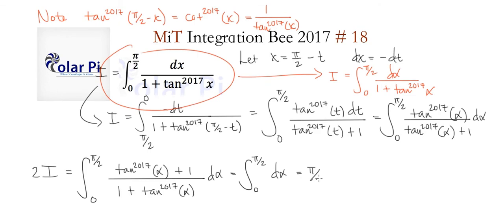Well, that's just alpha evaluated from 0 to pi over 2, which is going to be pi over 2, meaning 2I is equal to pi over 2, meaning I is equal to pi over 4. Isn't that cool? I thought so. Keep watching, take care.